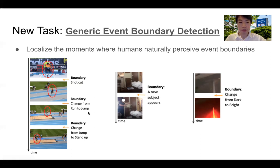There could be other boundaries that are not about action change. For example, in the second video, originally there is no subject, no human, and then a woman walks into the scene. As human beings, we could consider this an event boundary about a new subject appearing. And in the last example, originally the scene is dark. When the light is turned on, it becomes bright. So this is another kind of event boundary, more about situational or environmental change.